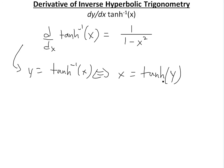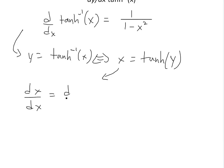The way to do this is by using implicit differentiation to find the derivative on both sides. We take the derivative of both sides — this is allowed because both sides are equal, so their derivatives must be equal as well. So now we take d/dx of hyperbolic tan of y.